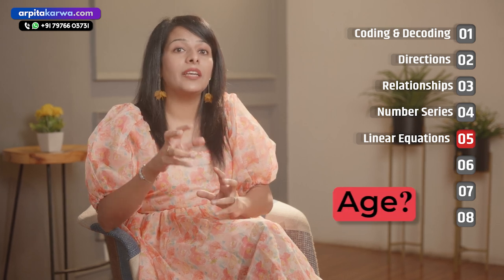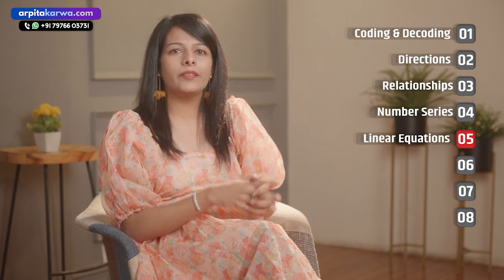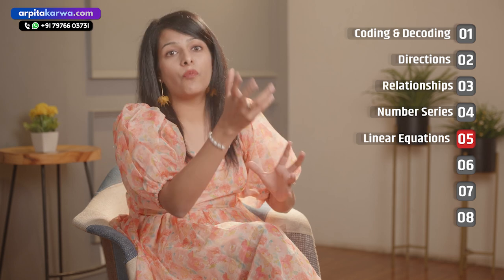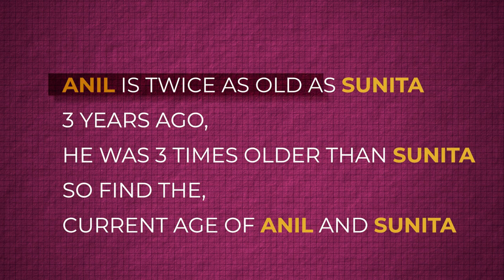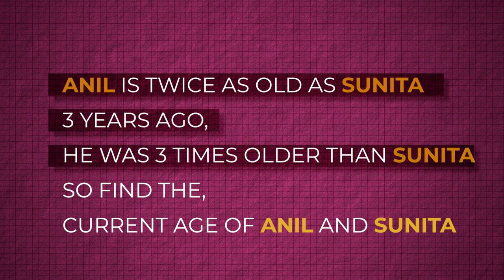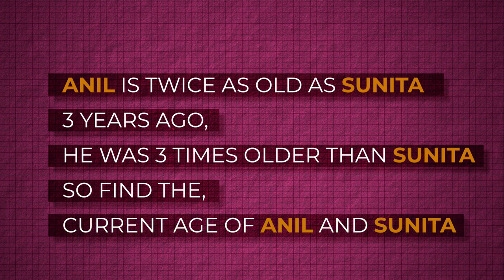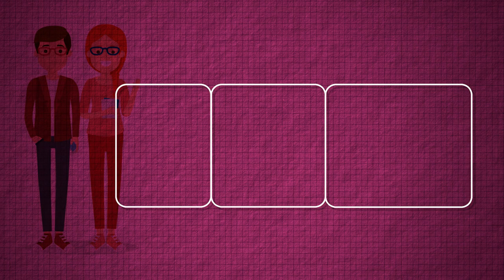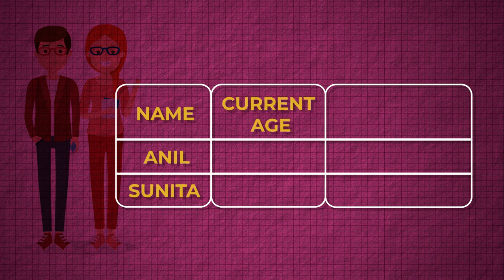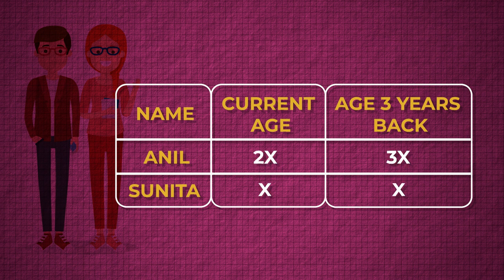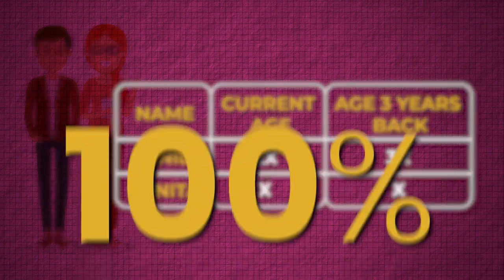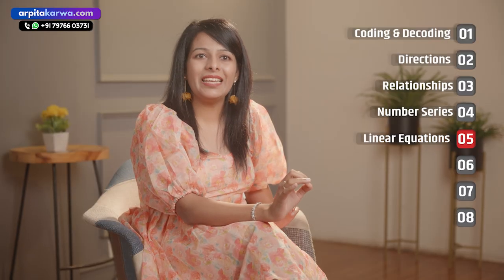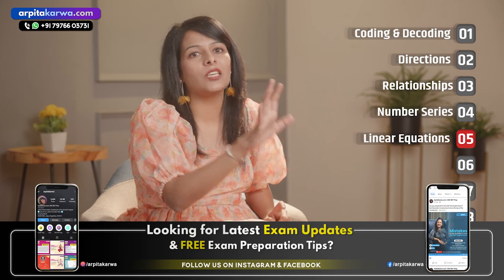A common type of linear equation question is age-based problems, where you are given two characters and must find out the age of one of them. For example: Anil is twice as old as Sunita; three years ago he was three times older than Sunita — find the current age of Anil and Sunita. In such cases, don't be afraid. Take a deep breath, make a table with three columns — name, current age, and age three years ago — plot the given data, and solve. The tricky part in linear equations is always making the equation, but solving the equations is very easy once the equation is formed.